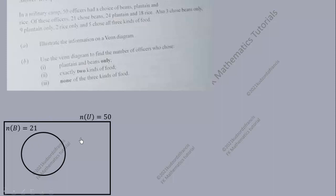So let's do that. We are going to use a rectangle to represent the universal set, because there were 50 military men in the camp — so the universal set is 50. We are told 21 chose beans, so the number of beans is 21 and we use a circle to represent all those choosing beans. We are also told that 24 chose plantain, and 18 chose rice.